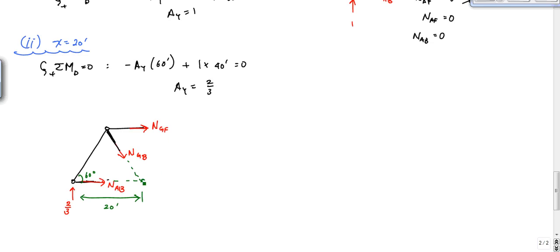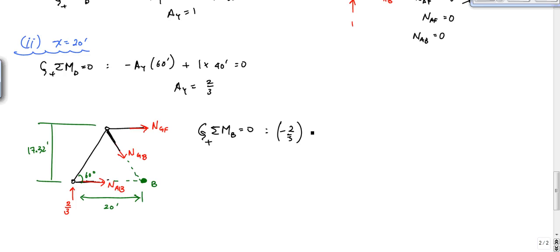Taking moments about point B — which eliminates NGB and NAB — gives one equation with one unknown. The equation is: minus two-thirds times 20 feet minus NGF times 17.32 feet equals zero. Solving, NGF equals negative 0.77.